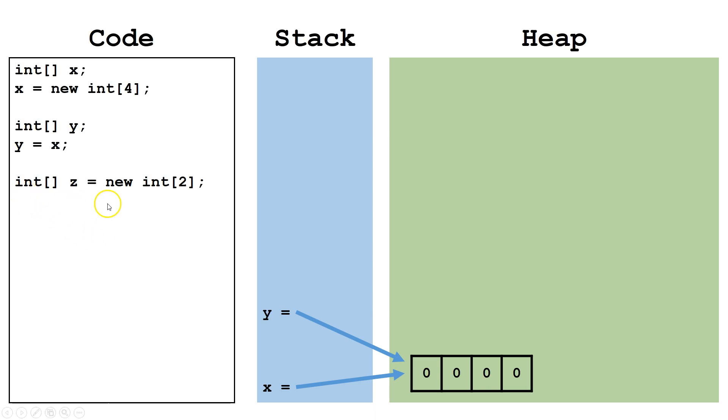Here, we're doing it all in one line. We are declaring a variable of type intArray. We are creating a new object on the heap. And we are putting a reference to the object in z on the stack.